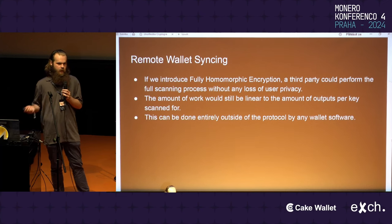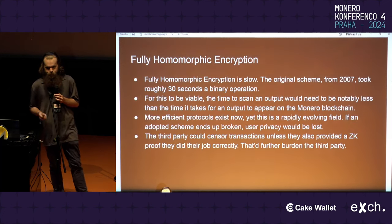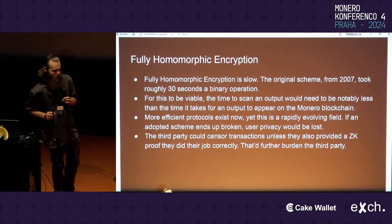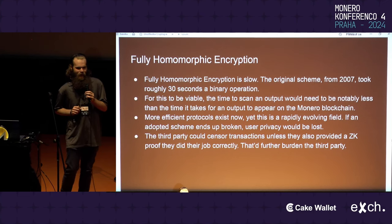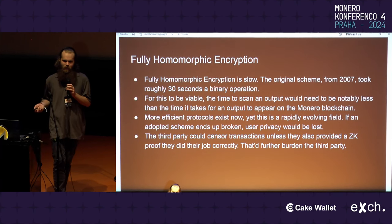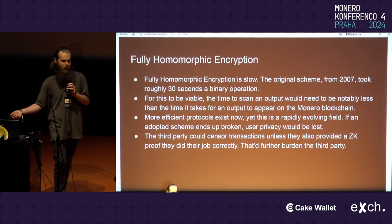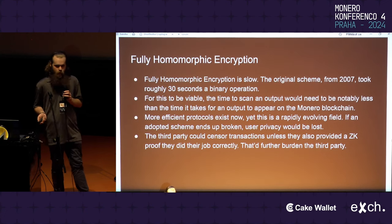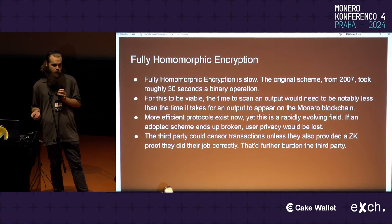It can also be done entirely outside of the Monero protocol — someone today could build a wallet that does this. Bad news: fully homomorphic encryption is very slow. In 2007, when first posited, it was 30 seconds per binary operation, and we do a lot of binary operations in the scanning process. For this to be viable, it has to be faster to scan an output than you can feasibly create an output on the Monero blockchain, else you form an infinitely growing backlog. There are more efficient protocols now, and it may be within a couple orders of magnitude of that breakeven point.